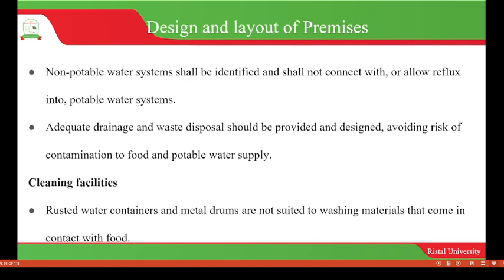There has to be adequate drainage and waste disposal, which should be provided and designed to avoid risk of contamination to food and the potable water supply. There also has to be cleaning facilities. We should not use rusted water containers because rust is formed as a result of chemical reaction, and once it gets into food, the food will get contaminated or become unsafe for consumption. Rusted water containers and metal drums are not suited to washing materials that come into contact with food.